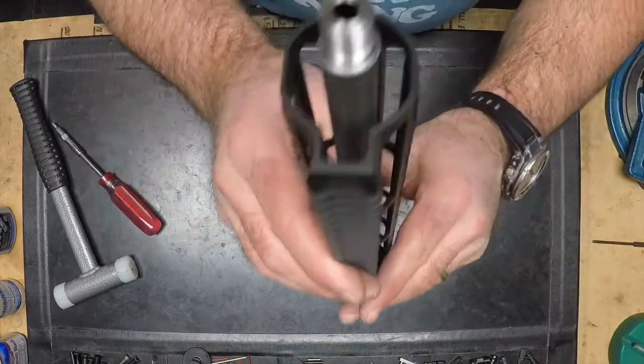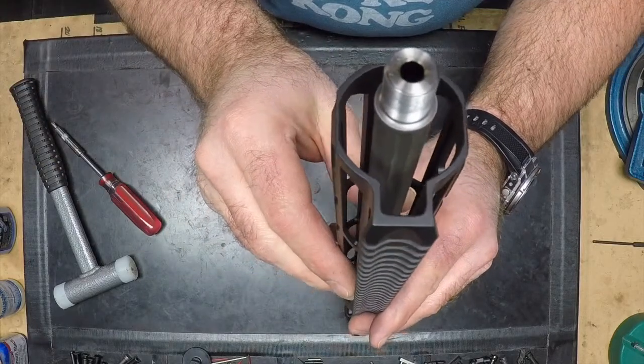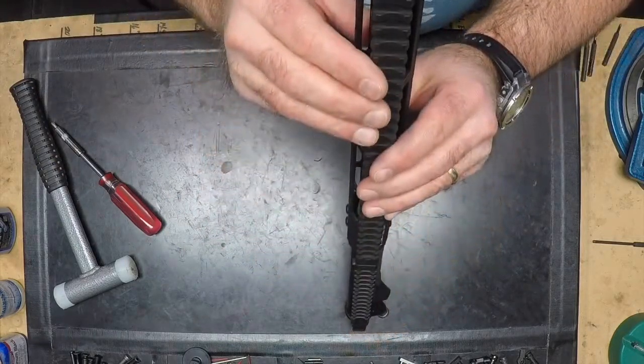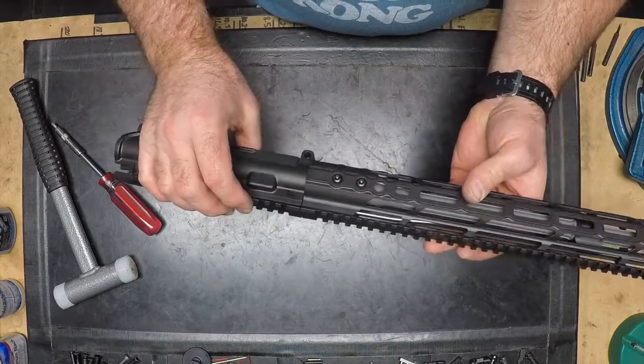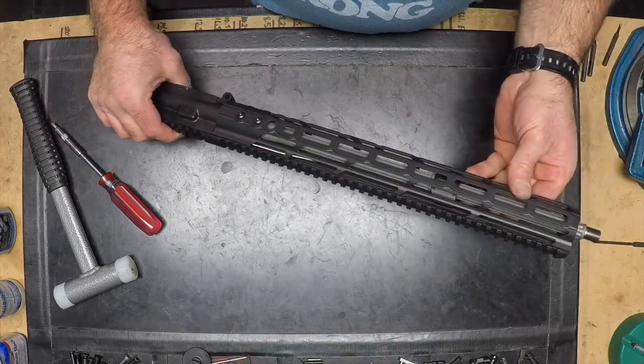And then the last thing I'll do is just take a look down and make sure that my gas block looks like it's perfectly lined up and everything looks good and in line. This one does. So we'll move on to the next step. The next step would be the muzzle device.